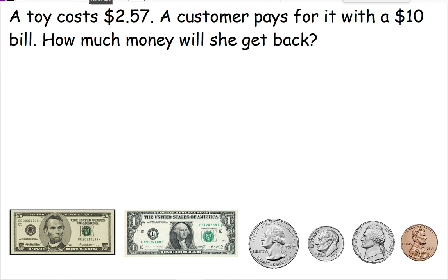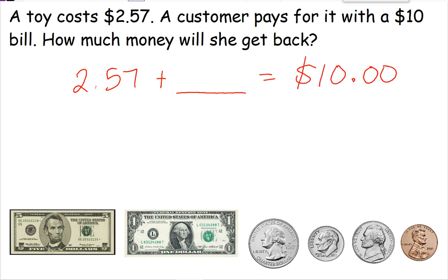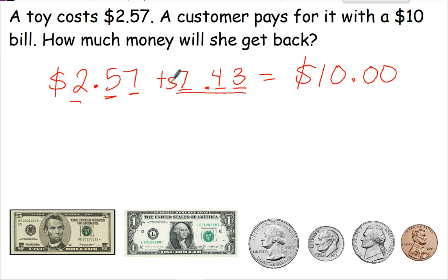This helps us when we're trying to figure out change, because a $10 bill is the same as 1,000 pennies. A toy costs $2.57 and a customer pays for it with a $10 bill — how much money would she get back? So we have $2.57 plus something equals $10. We say 7 plus something equals 10 — 7 plus 3 equals 10. 5 plus something has to equal 9 — 5 plus 4 equals 9. And 2 plus something has to equal 9 — 2 plus 7 equals 9. So the customer should get back $7.43.